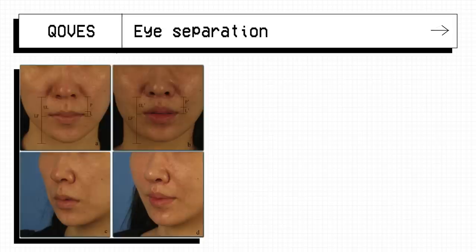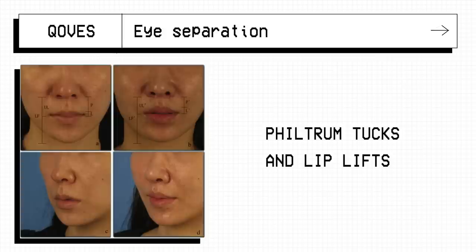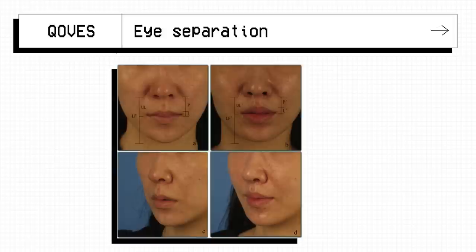A lot of women especially get the philtrum tucks and lift lips, presumably to get a more harmonious length ratio. This isn't a cultural beauty standard either and there is a strong preference for marginally shorter mid-faces in both the east and west.